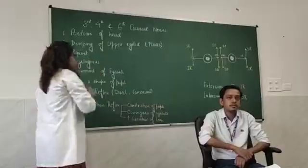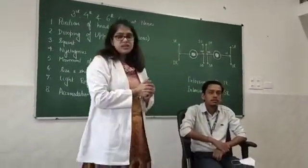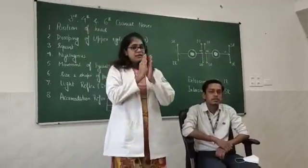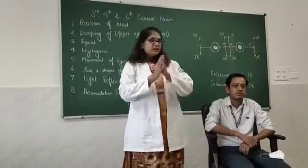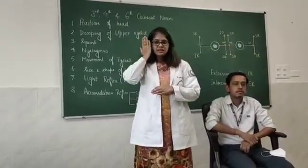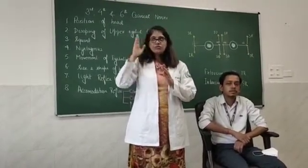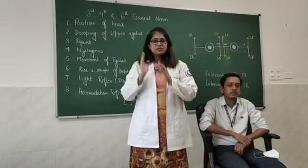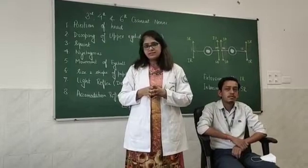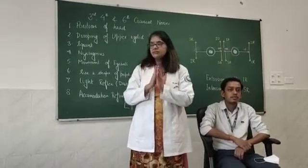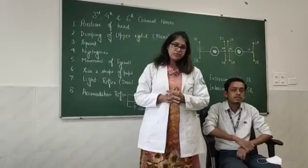Starting with the position of the head, which is straight in this subject. But it may be tilted, and we call that condition torticollis. Why is the head tilted? Suppose the lateral rectus on one side is paralyzed — if I cannot move my eyes in that direction, I will rotate my head to look in that field of vision. That permanent head rotation is called torticollis.